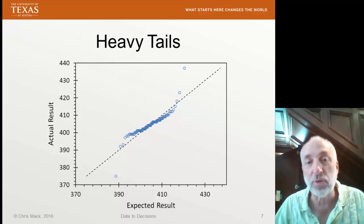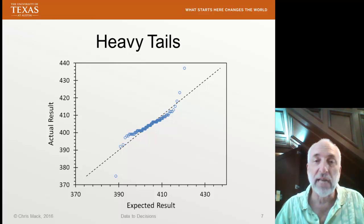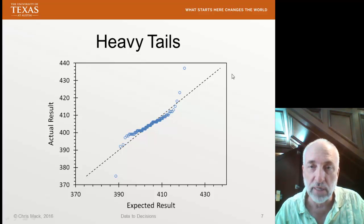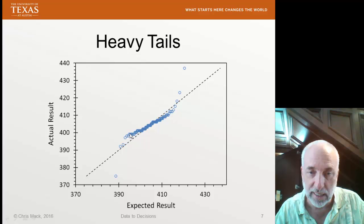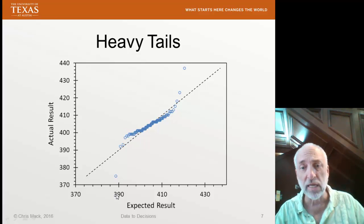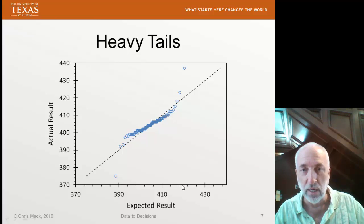If I have a distribution that is symmetric but has heavy tails, then I see kind of an S-shaped curve where it comes down, looks sort of straight for a while, and then comes down again. In other words, if my expected result is here, say 420, my actual result is larger, say 430.